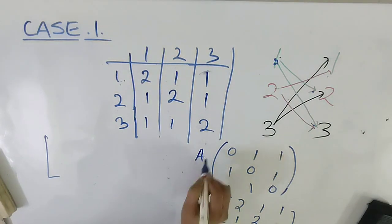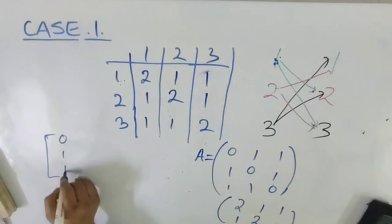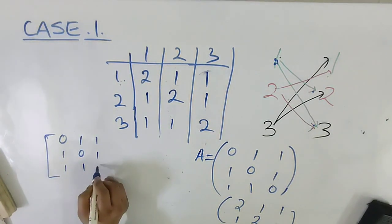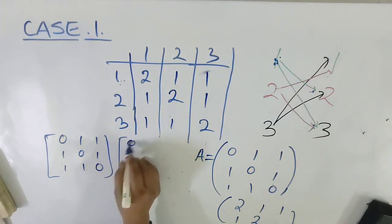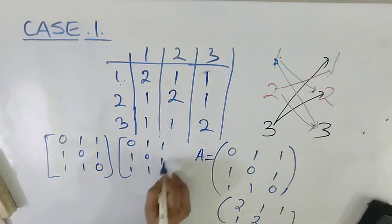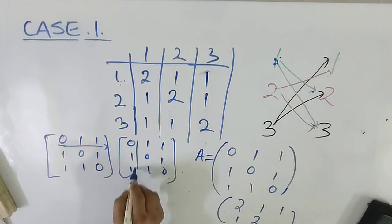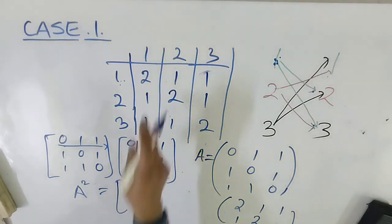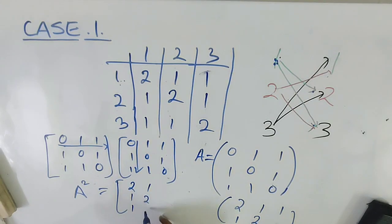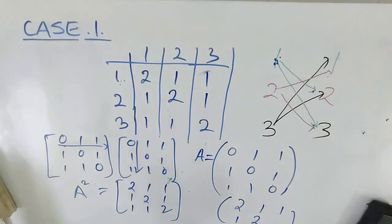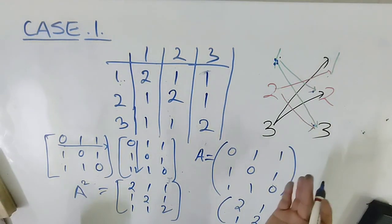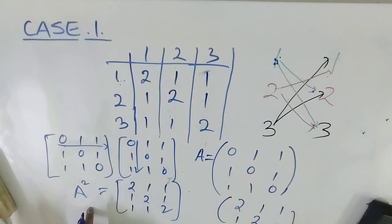Now the amazing thing: if I square matrix A, where A is the original game matrix with entries 0, 1, 1 / 1, 0, 1 / 1, 1, 0, and I multiply it — A squared gives exactly 2, 1, 1 / 1, 2, 1 / 1, 1, 2. This is very, very interesting — from the same game matrix we get A squared equal to the path matrix. Similarly, if we extend to three dimensions, we get the cube of A. This is the amazing beauty of matrix.